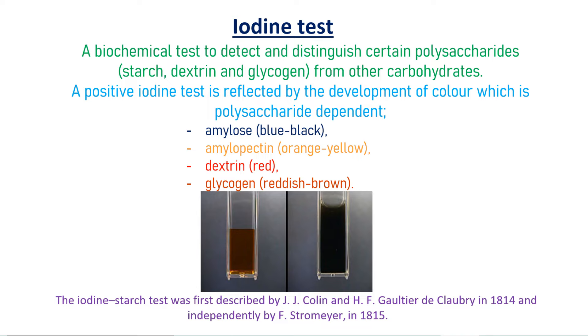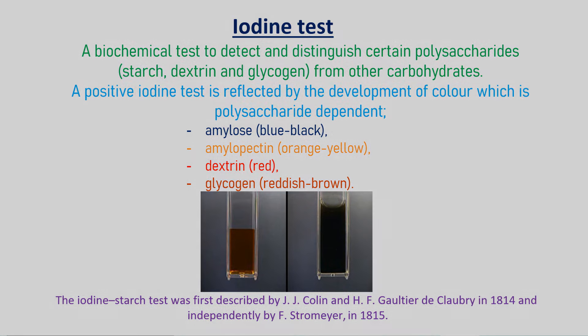The iodine starch test was first described by J.J. Cullen and H.F. Gauthier do Clabry in 1814, and independently by F. Strohmeyer in 1815.